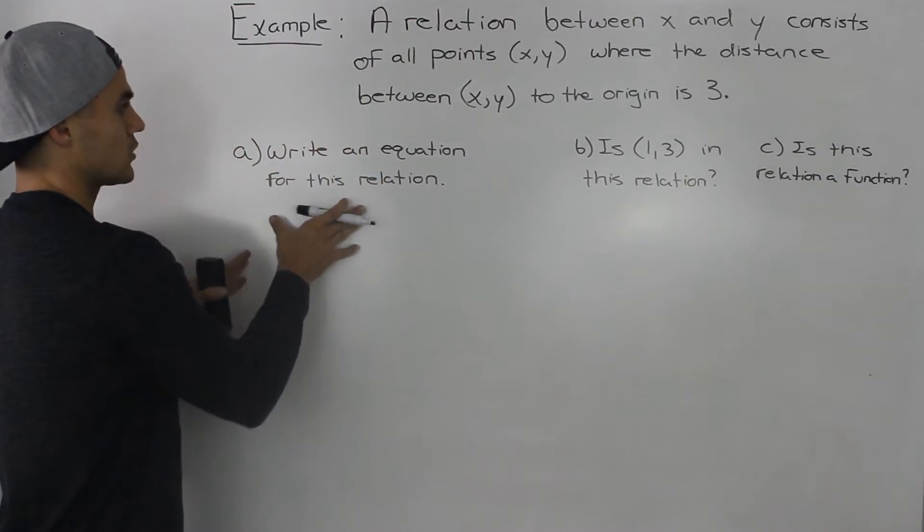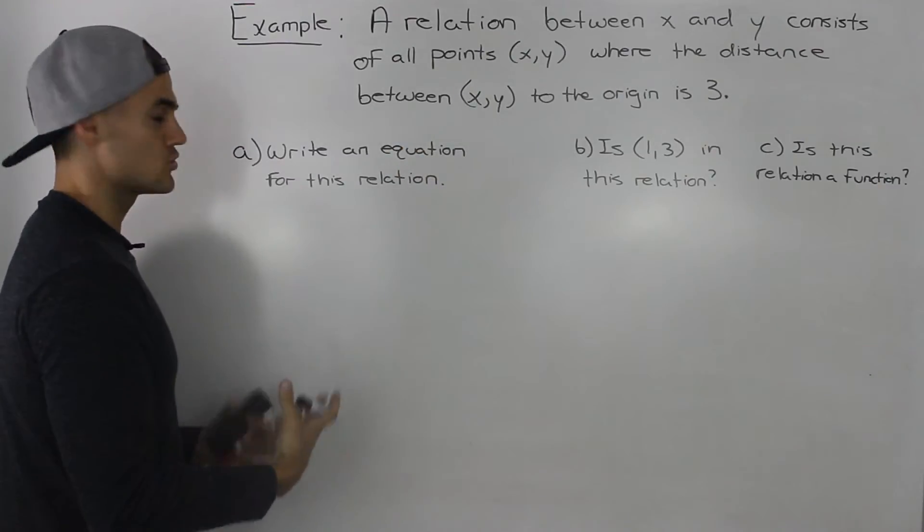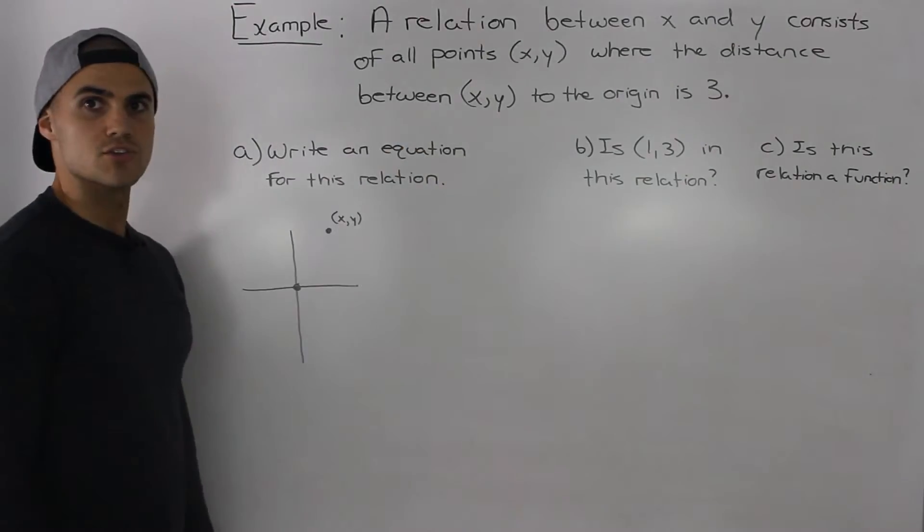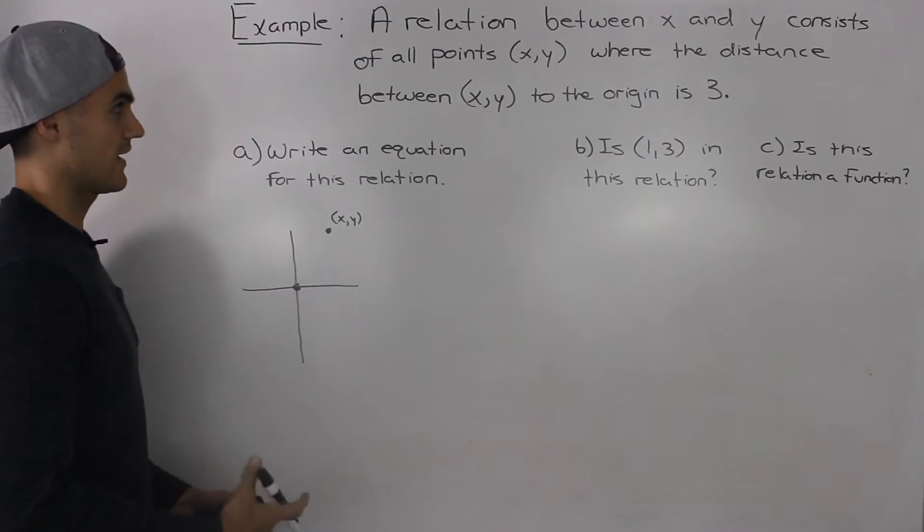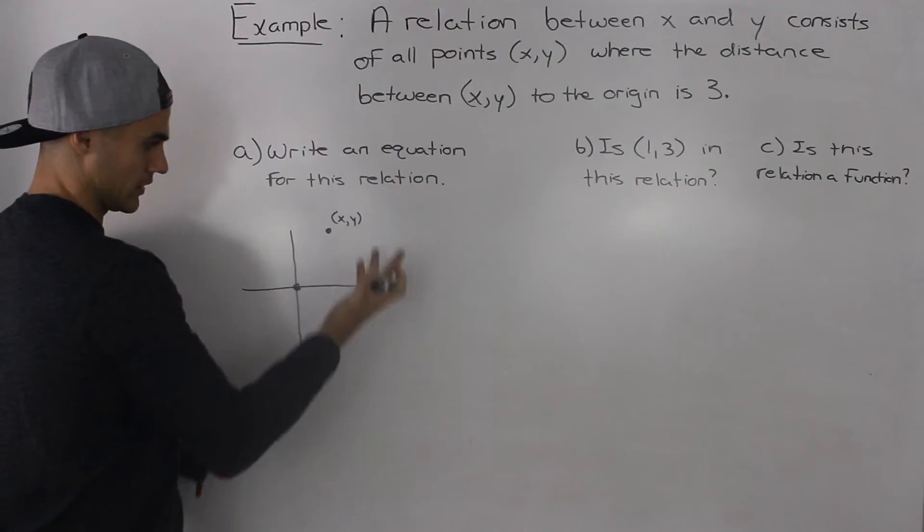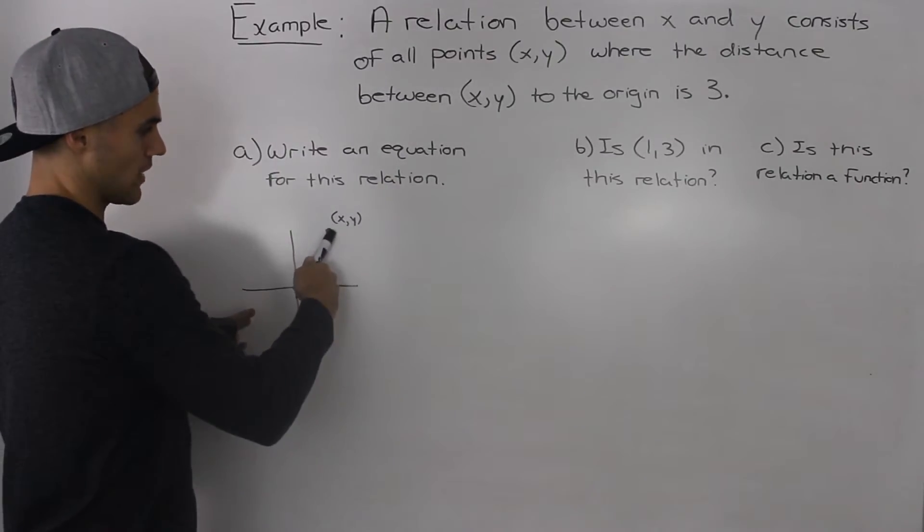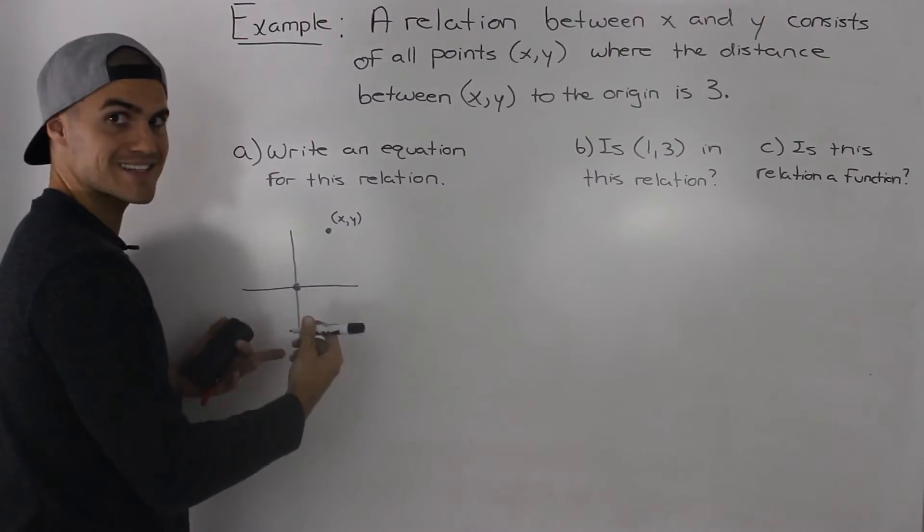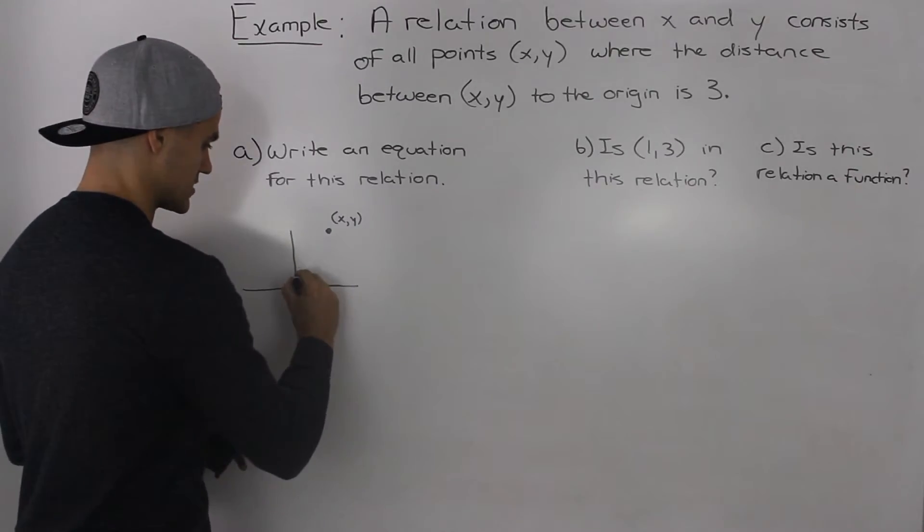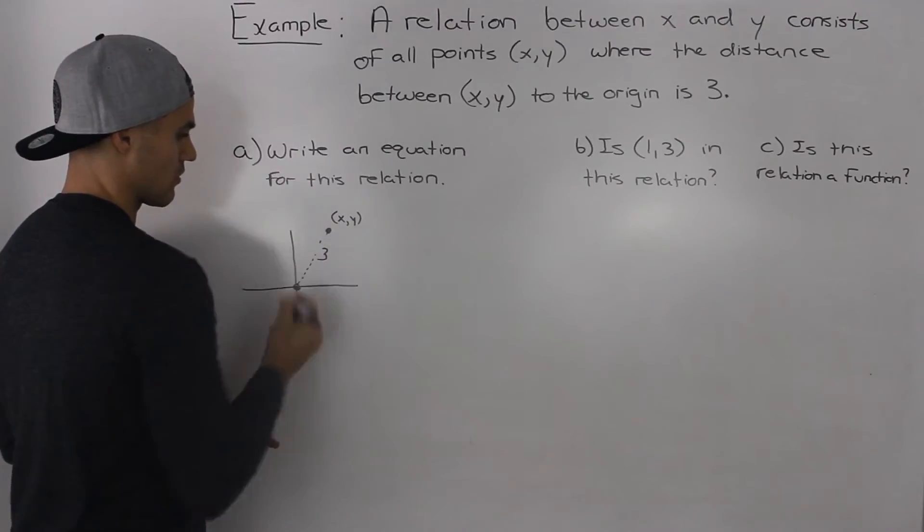So for part a when we find the equation of this relation, I'm going to show you how to do it in two different ways. The first way, let's show it through a diagram. So we have a point (x, y), just a random point it could be anywhere, and the distance between (x, y), this point, and the origin has to be 3. So this distance over here has to be 3.